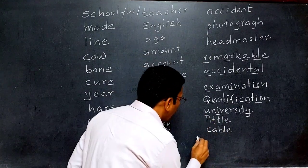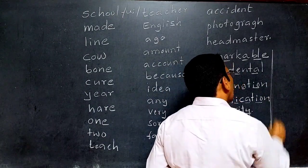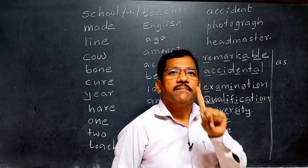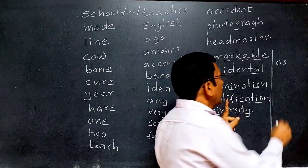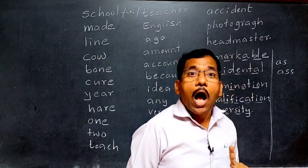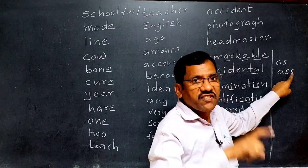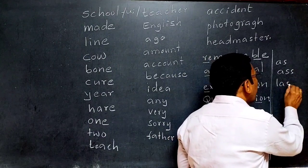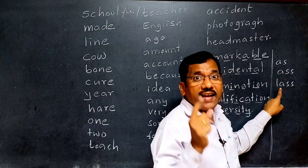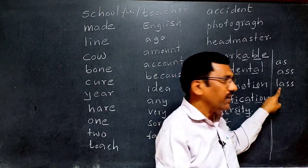Now one interesting example: 'us' — how many syllables? One syllable, because there is only one vowel sound.